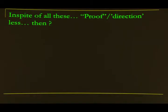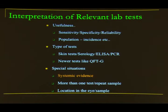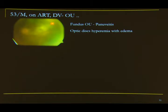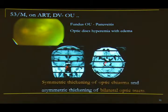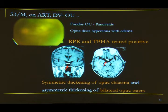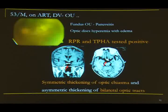Despite all investigations, sometimes you remain directionless. Systemic evidence then helps guide the direction. In an HIV-positive patient with pan-uveitis, optic disc edema and unknown etiology, MRI showed symmetrical thickening of the optic nerves and chiasm, suggesting bilateral optic tract involvement typical of syphilis. RPR and TPHA were repeated and found positive. Systemic imaging and other systemic evidence help point toward the correct lab tests.